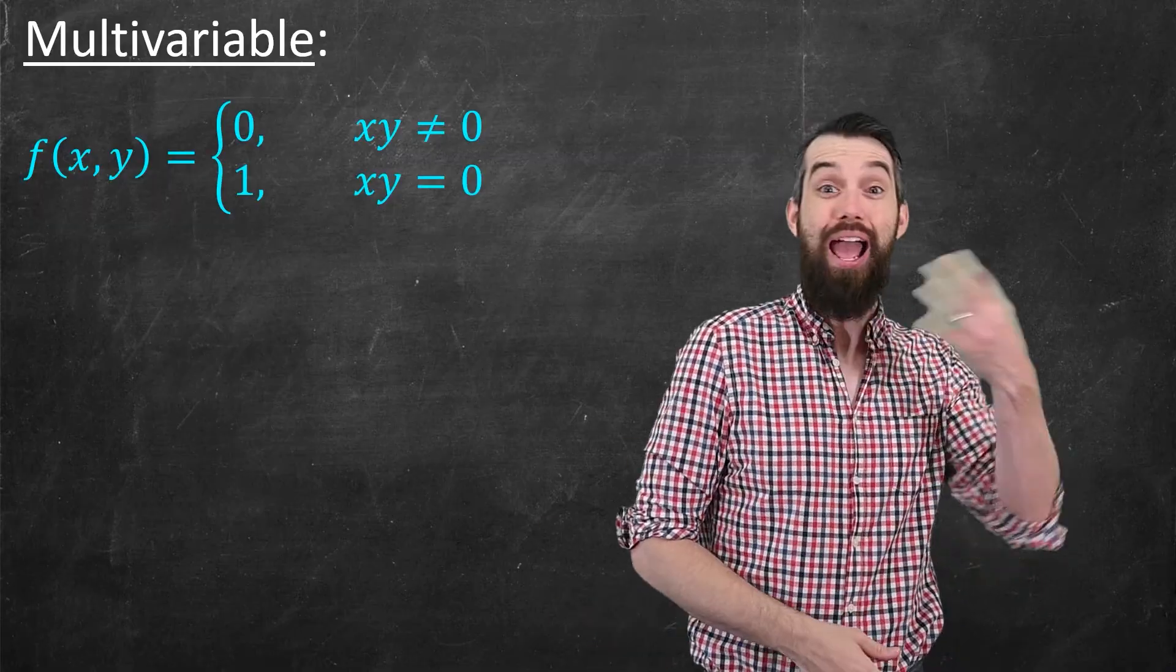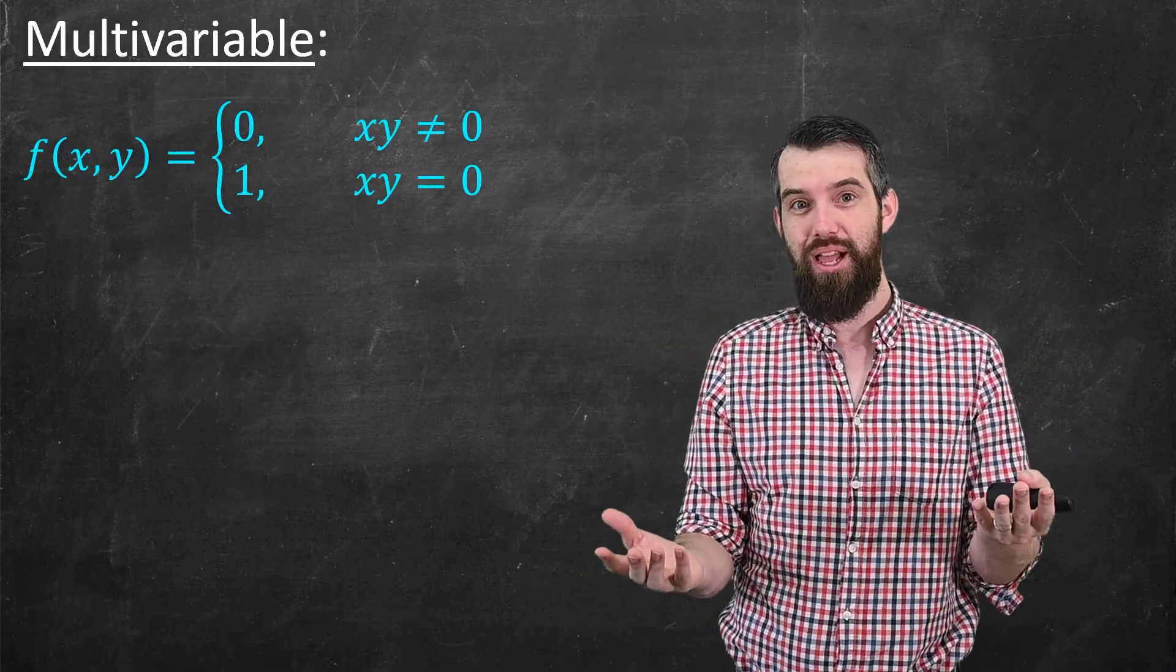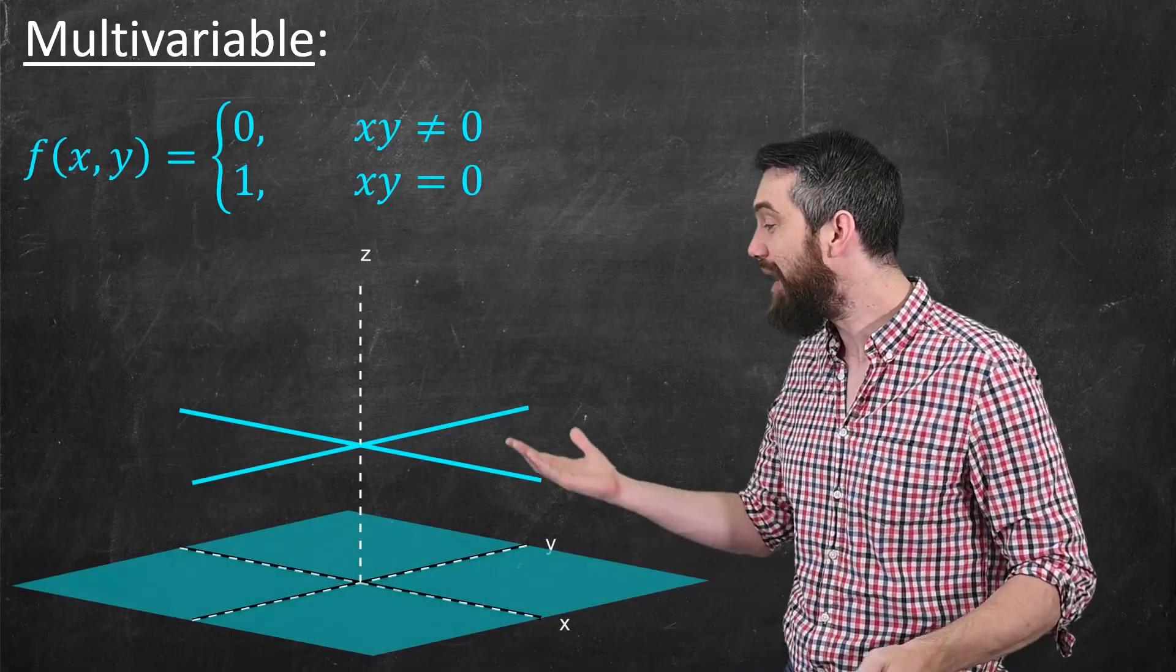(x,y) equaling (0,0) is just saying either x is 0 or y is 0. Those are the axes. And so this is what it actually looks like. It looks like a cross.